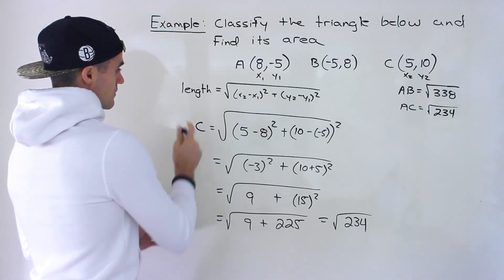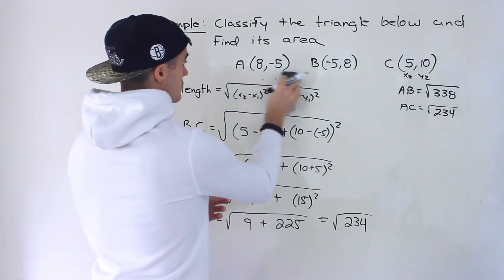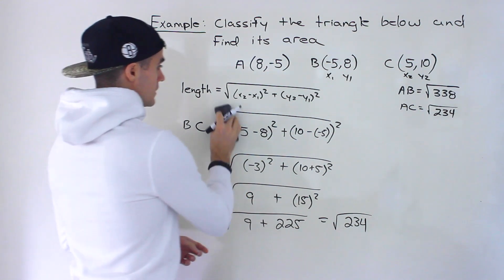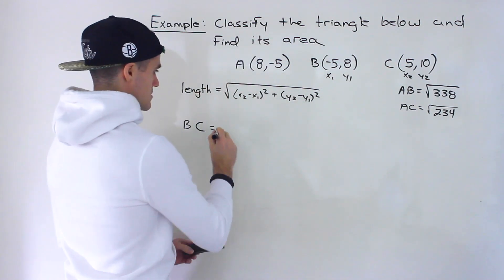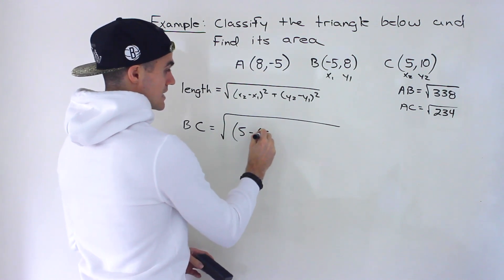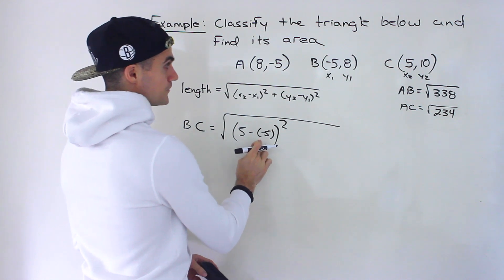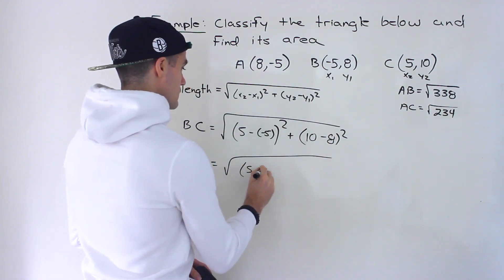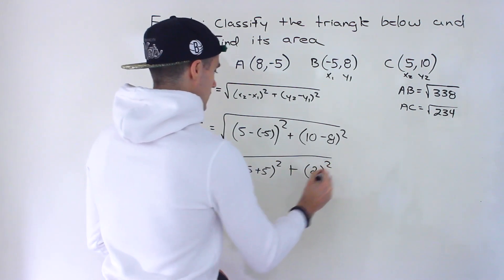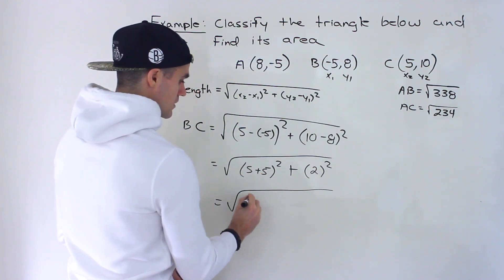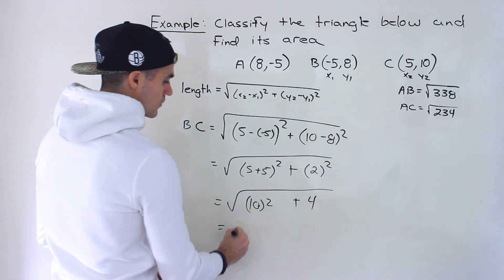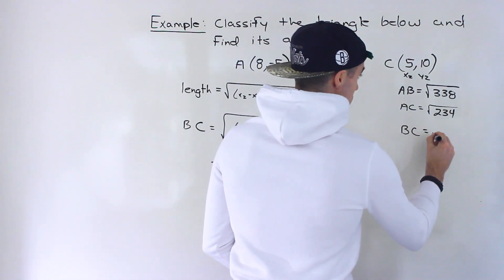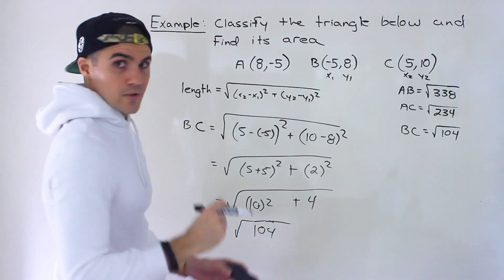Now let's find the length of BC. We have B as (x₁, y₁) = (−5, 8) and C as (x₂, y₂) = (5, 10). So we'd have √[(5 − (−5))² + (10 − 8)²] = √[10² + 2²] = √[100 + 4] = √104. So the length of BC is √104. All right, so we have all three side lengths.